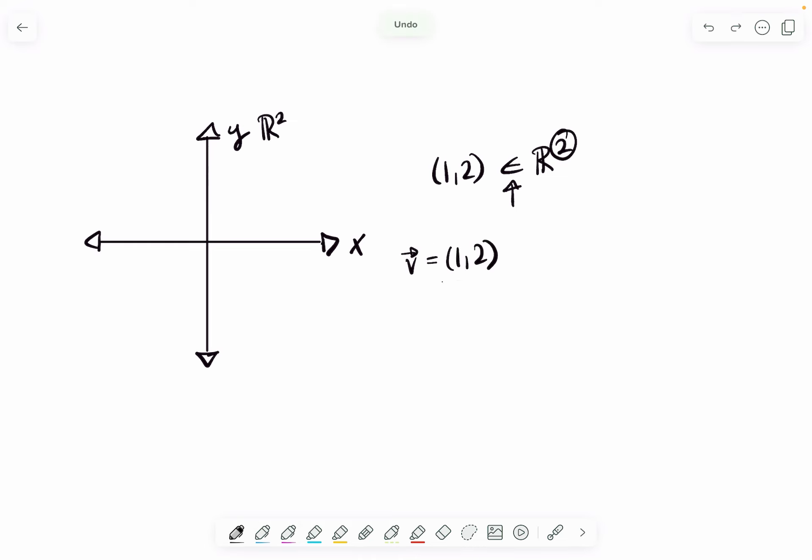This is what we call a row vector because it's horizontal. But we can rewrite vectors in the form we see most often, which is a column vector, so vertical.